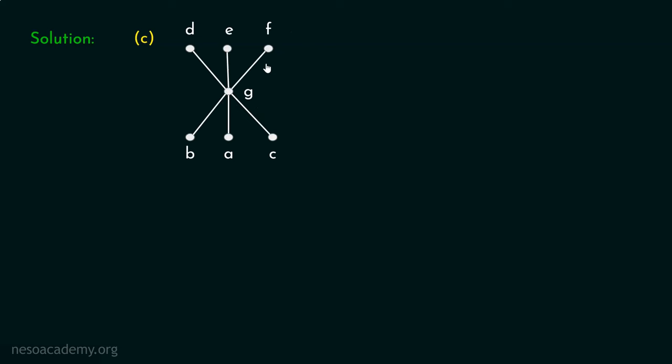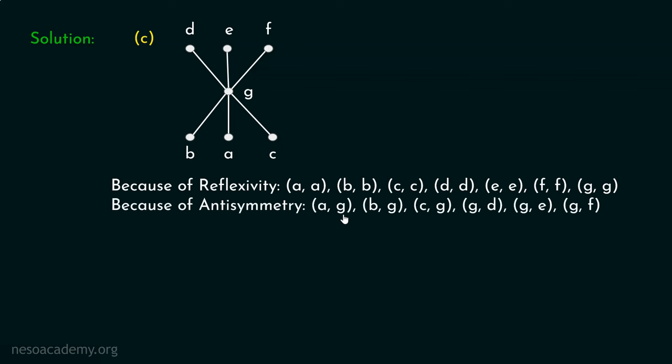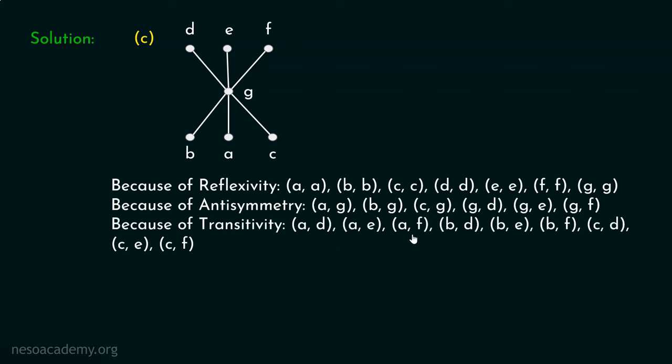Now let's consider the third Hess diagram with seven vertices A, B, C, D, E, F, G. Because of reflexivity, (A,A), (B,B), (C,C), (D,D), (E,E), (F,F), (G,G) must belong to the partial order. Because of anti-symmetry, (A,G), (B,G), (C,G), (G,D), (G,E), and (G,F) must also belong. B and G are related, A and G are related, C and G are related, and G is related to D, E, and F.